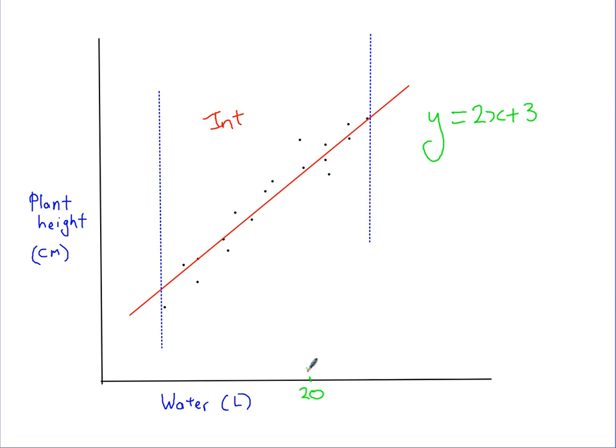We want to work out how much the plant has grown by finding the y coordinate, and then we can place it on this line. If we know that the equation is this, all we have to do is substitute in x equals 20, and we should be able to find out our y value, which would be the height of the plant.